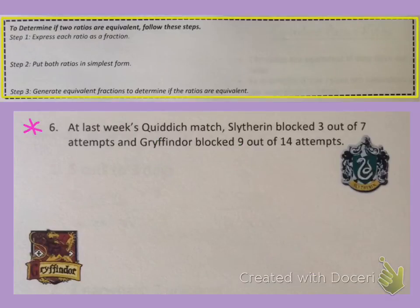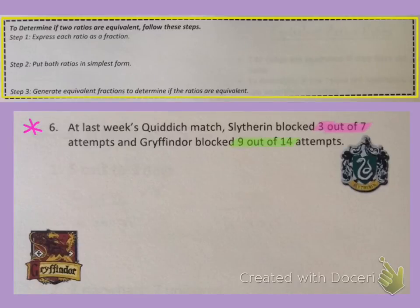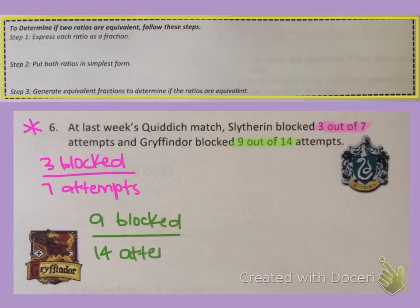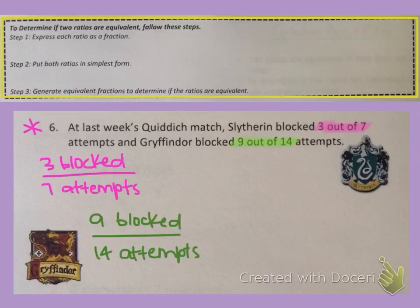At last week's Quidditch match, Slytherin blocked three out of seven goal attempts and Gryffindor blocked nine out of 14 goal attempts. We need to highlight the numbers going in our ratios: three out of seven, and nine out of 14. So three blocked out of seven attempts for Slytherin, and nine blocked out of 14 attempts for Gryffindor. Now pause the video, put them in simplest form, then press play to check.